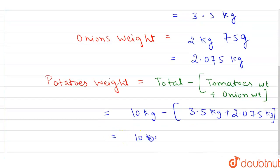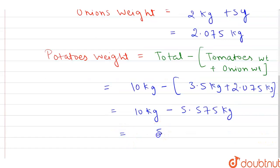So this will be equal to 10 kg minus, if we add them this will be equal to 5.575 kg. So this will be equal to 4.425 kg. This is the weight of potatoes. Thank you.